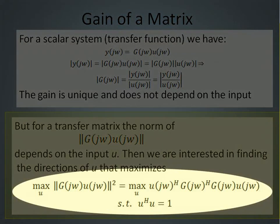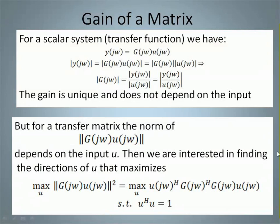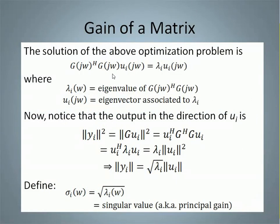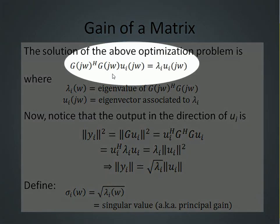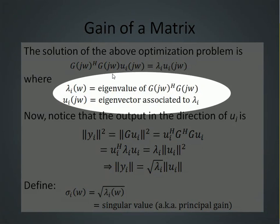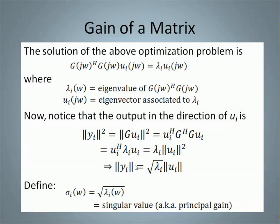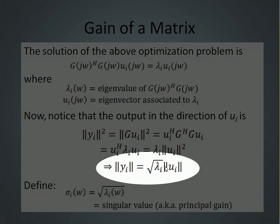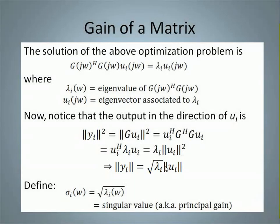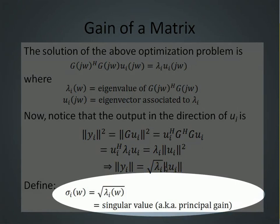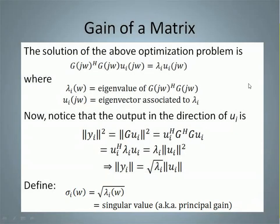We are interested in finding the directions of the input vector that maximize the norm of the output — where the superscript H denotes conjugate transpose. The solution of the optimization problem is given by the expression where lambda_i is an eigenvalue of G^H·G, and u_i is the eigenvector associated to lambda_i. The gain of G in the direction of u_i is the square root of lambda_i, which is known as the i-th singular value of G, also called the i-th principal gain of G.